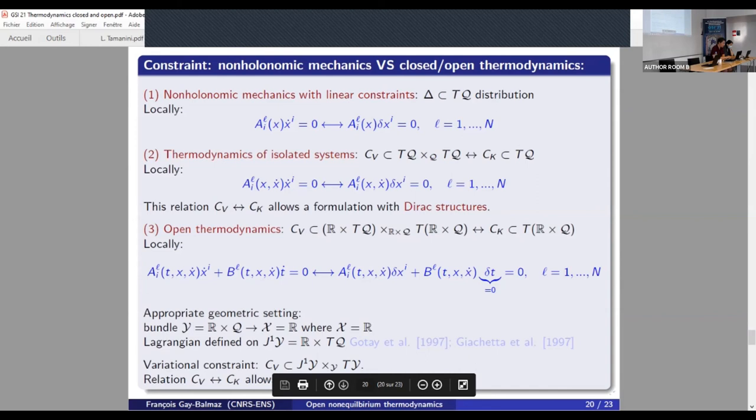And then I can explain something on the constraint. So here you have the constraint that appeared for closed system, in which case you have Dirac structures, as explained in the previous case, for open thermodynamics, the constraints are a little bit harder to realize geometrically, but it is like this, it's a subspace of this. And here we recognize that this is the setting of time dependent mechanics. This is the geometric setting of time dependent mechanics, which is well described in terms of jet bundle. This indicates that the correct setting for this geometries are still Dirac structure, but written in the context of time dependent mechanics, which is the natural extension.